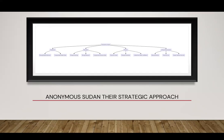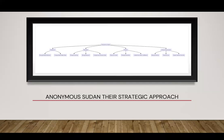They also target education — universities and institutions — disrupting learning, research, and administrative functions; these often hold vast amounts of personal data. Finance is another top target, as financial institutions like banks and payment systems hold money and have obvious economic importance. Successful attacks can cause financial losses, disrupt economies, and undermine public confidence. They also attack critical infrastructure — airports, power grids, and official government websites — causing massive disruptions and threatening international security.